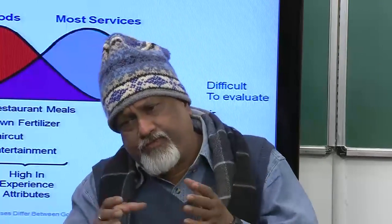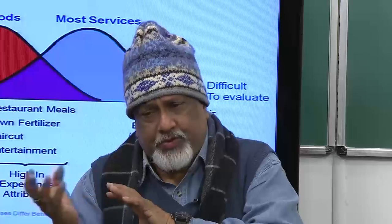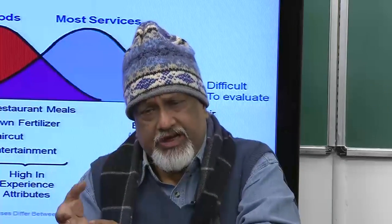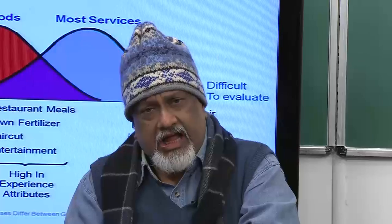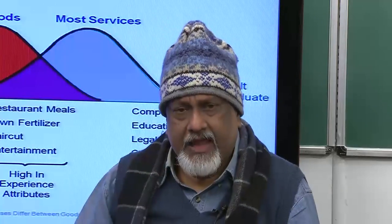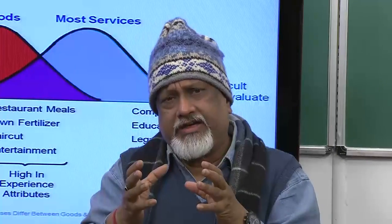Moving towards the extreme right, we have items like education, a music concert, a movie, legal services, complex medical treatment, or surgery. Here we have only a general idea of what we want — for example, we want relief from pain, and surgery may be a step forward toward that relief. Therefore, we do not have a very clear-cut, concrete idea of what we are going in for.